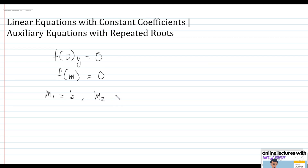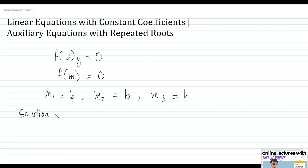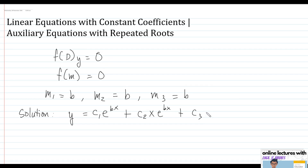Let's say m₁ = b, m₂ = b, and m₃ = b as well. So what would be the solution of this particular linear equation? Upon determining the roots and knowing that they are repeated, the solution would be y = c₁e^(bx) + c₂xe^(bx) + c₃x²e^(bx).